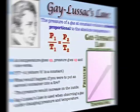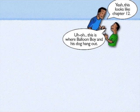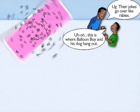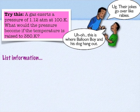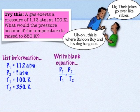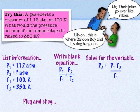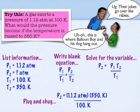Let's look at an example of Gay-Lussac's Law. A gas exerts a pressure of 1.12 atmospheres at 100 Kelvin. What would the pressure become if the temperature was raised? Since the temperature is being raised about a little over three times, we'd expect the pressure to go up a little over three times. We list our relevant information: P1, P2, T1, T2. We write down our equation: P1 over T1 equals P2 over T2. Solve for P2. We plug in our numbers — Kelvin over Kelvin cancels out — and it ends up being about four atmospheres, which is what we expected.